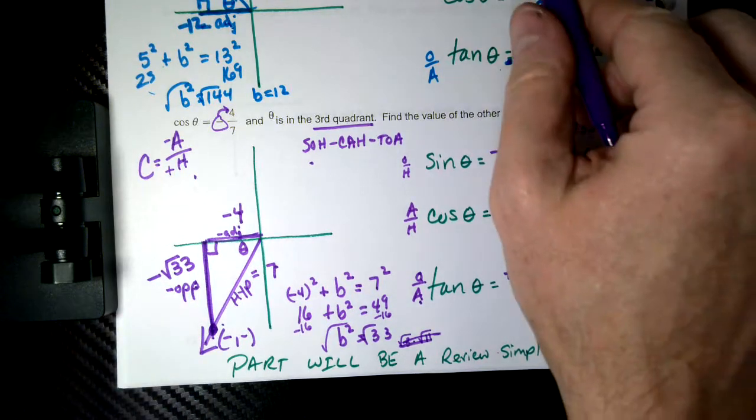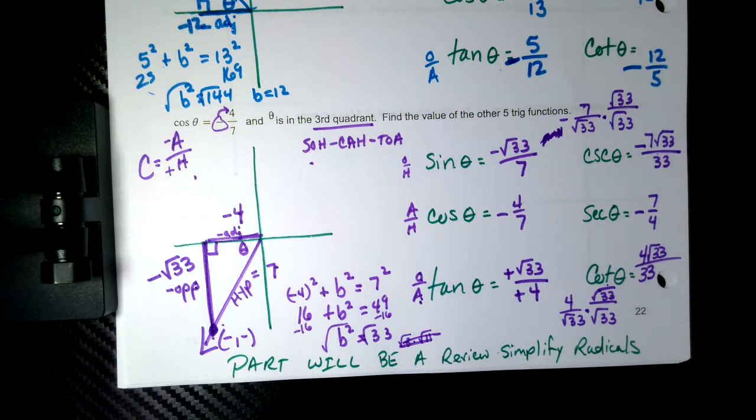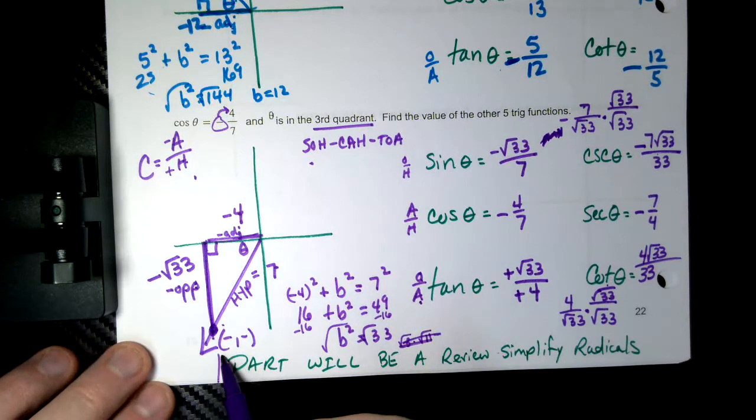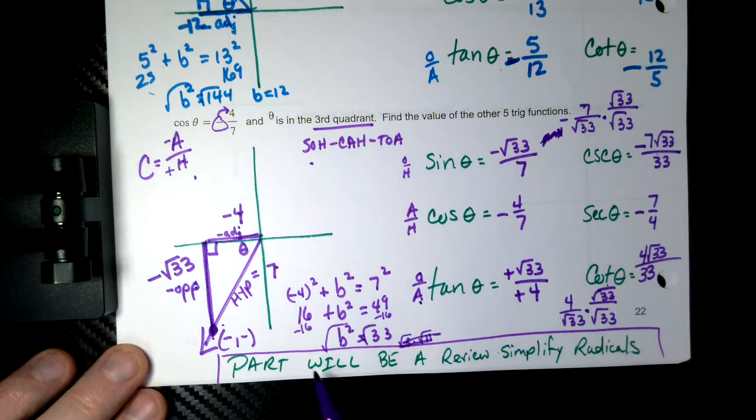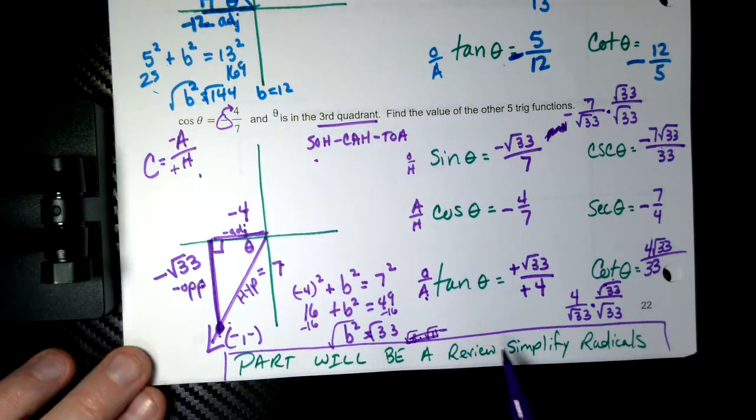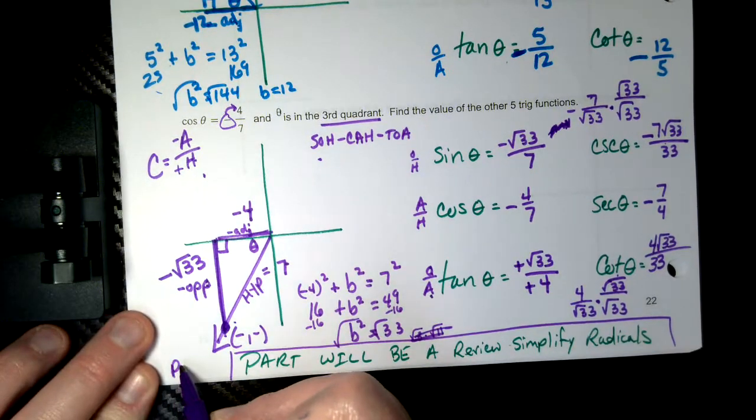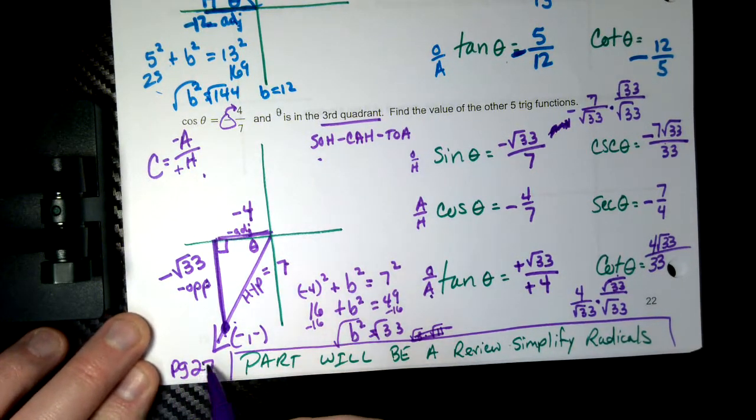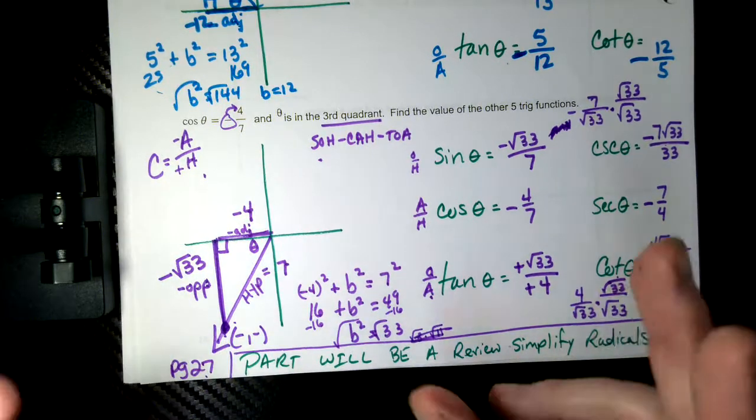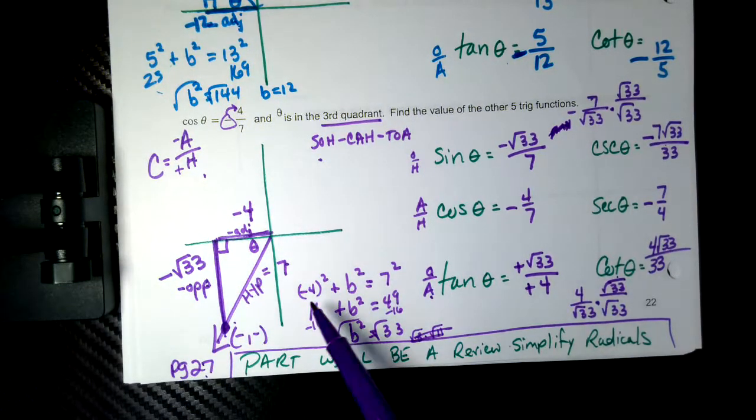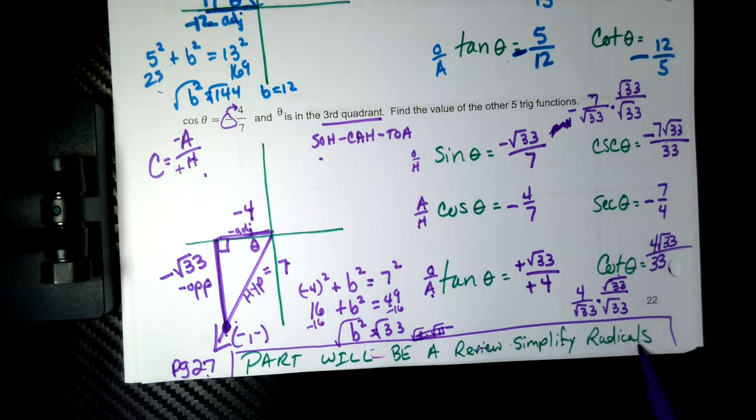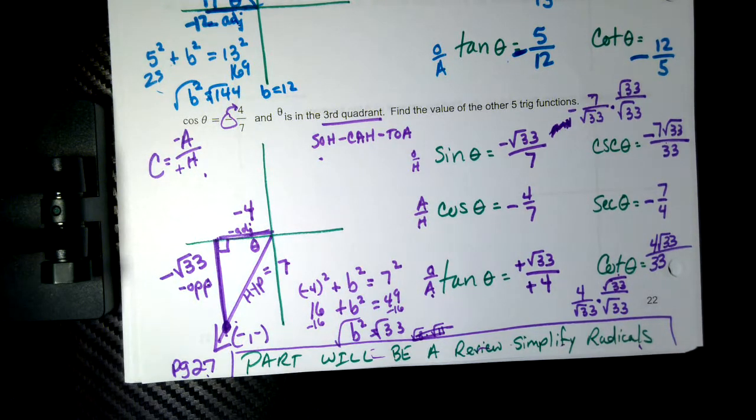Now this concludes the notes for 1-6, but I'm not done. I'm going to do, it'll be shorter. I'm going to do on what is page 27. It's a blank page on 27. Turn to page 27. I don't think it's numbered, but it's the first blank page. We're going to do a review on simplifying radicals.